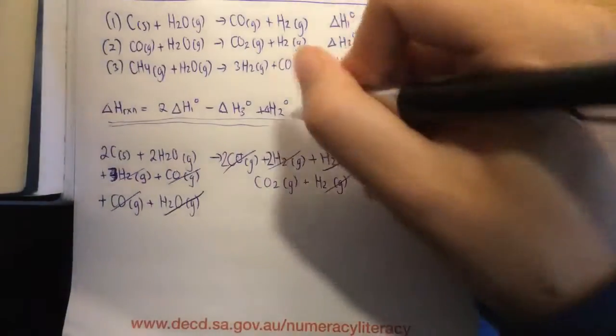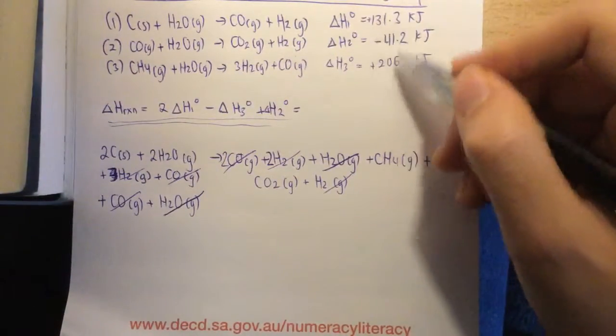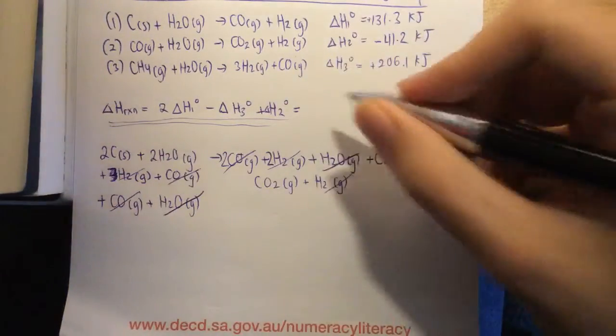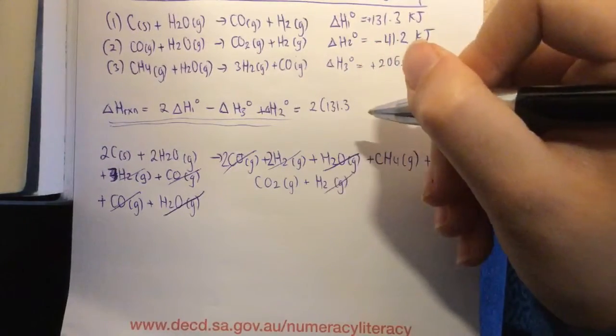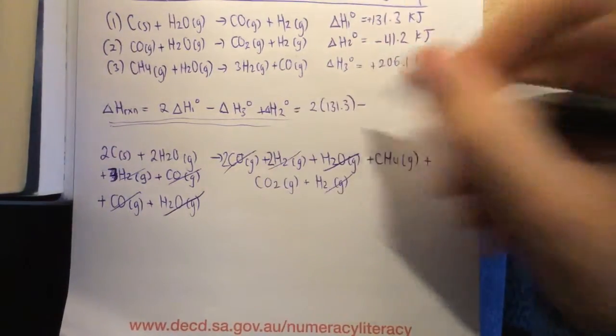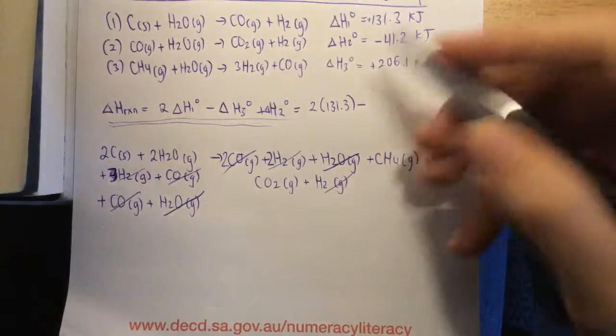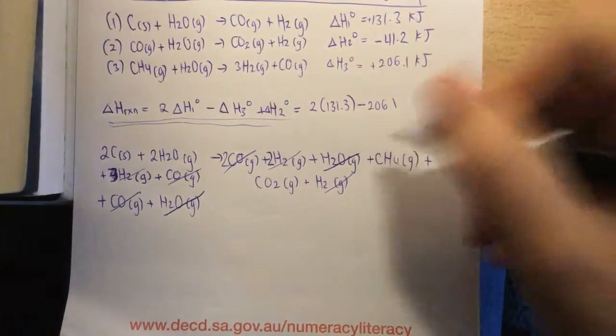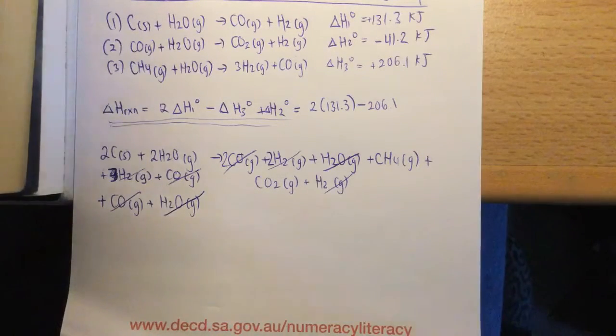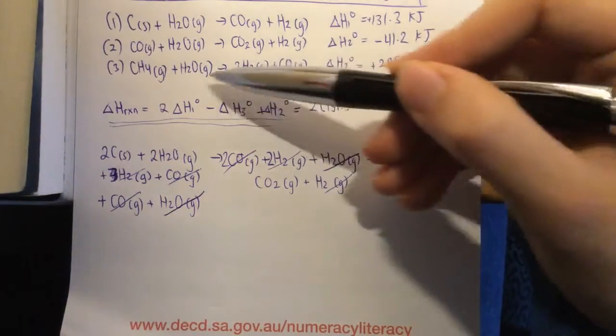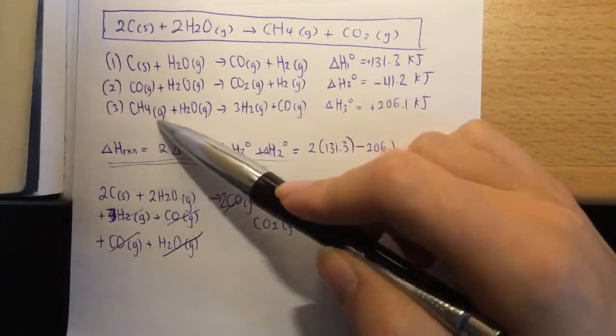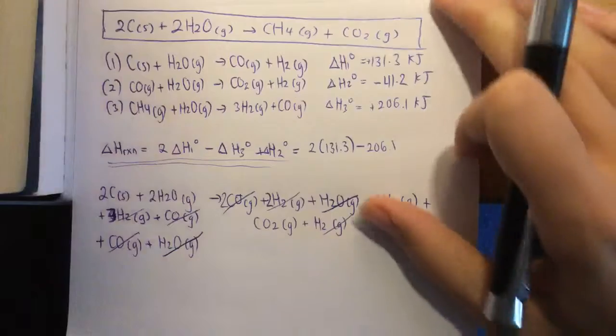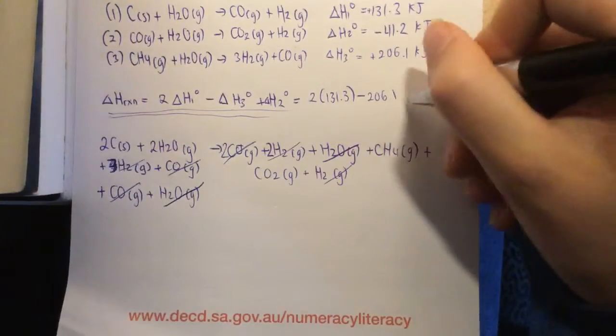So now what we need to do is we need to plug these values into our equation. So we've got positive, negative, and positive here. So we start with two delta H1. So that's two lots of 131.3. And so what we do is we subtract H3. So we need to change the sign. So it's going to be 206.1. And again, we're changing the sign, and I've probably said it a few times in the video, but it's really important that you get the signs right here, otherwise your delta H value is going to be way off. But whenever we reverse the reaction, which we did because we wanted our CH4 to be on the product side of our new equation, rather than the reactant side, we have to change the sign when we do that.